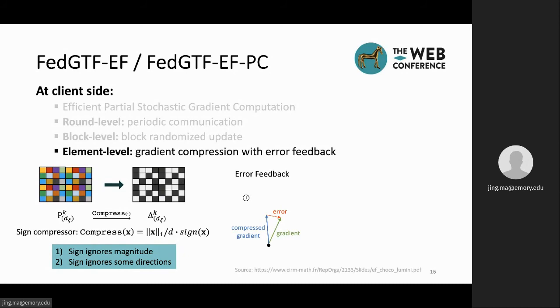We use error feedback to memorize the error in the current iteration and feed it back to the gradient of the next iteration. Suppose there is an error between the true gradient and the compressed gradient. Instead of ignoring the error, we feed this error back to the next gradient update. And then we update the model with the compressed error shifted gradients.